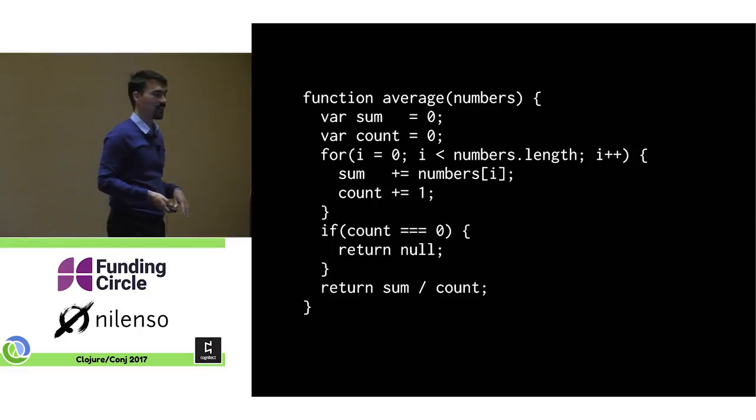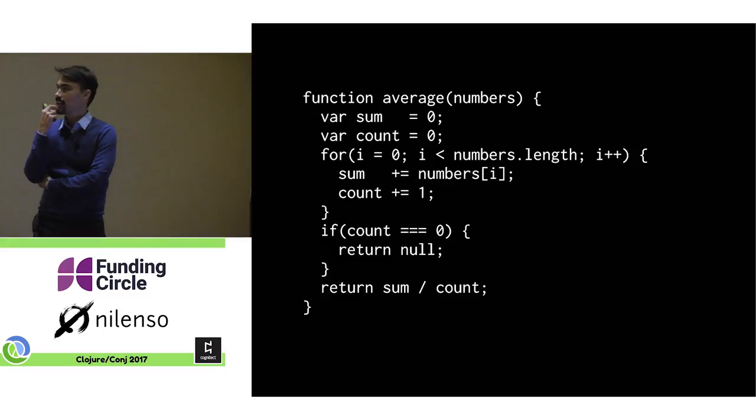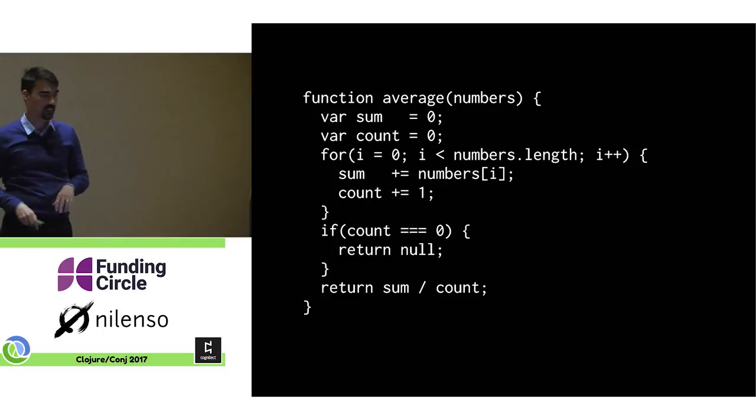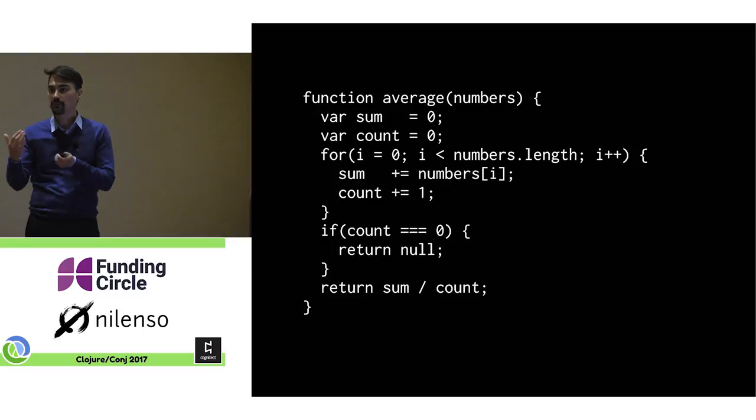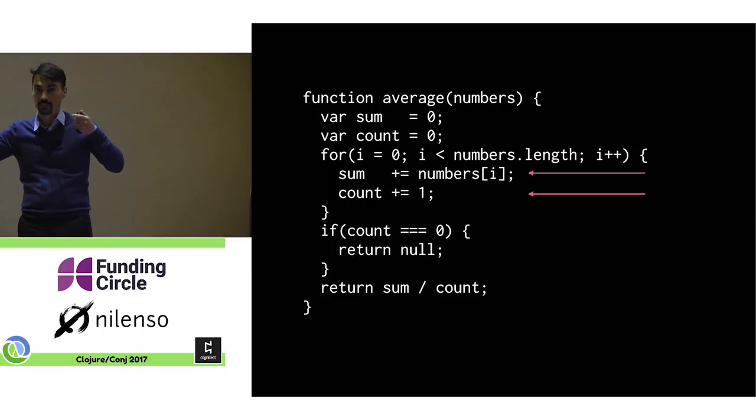So here we have a function average where you have an array of numbers and you initialize some variables. And then we loop through the numbers and we accumulate the values into our variables. Then at the end, we divide. And we have this kind of case where if it's zero, we don't know what to return. So here I'm returning null. That doesn't matter right now. I want to show this part. This is what we should focus on. What we should focus on is that at each iteration through the loop, we have a complete number and count for the things we've already seen. And we're grouping them like from the left of the array one at a time.